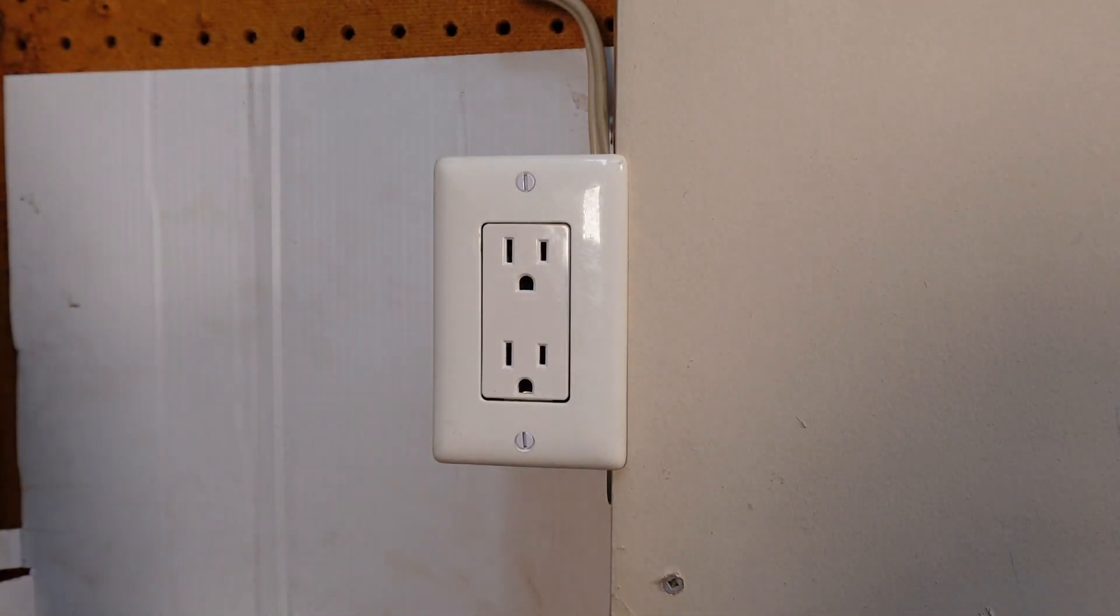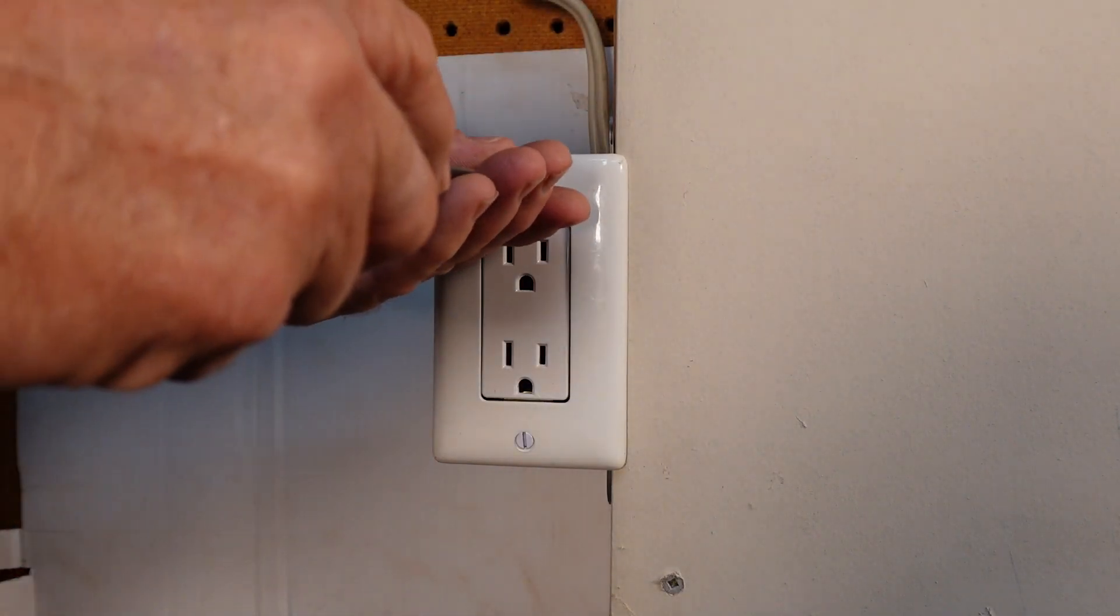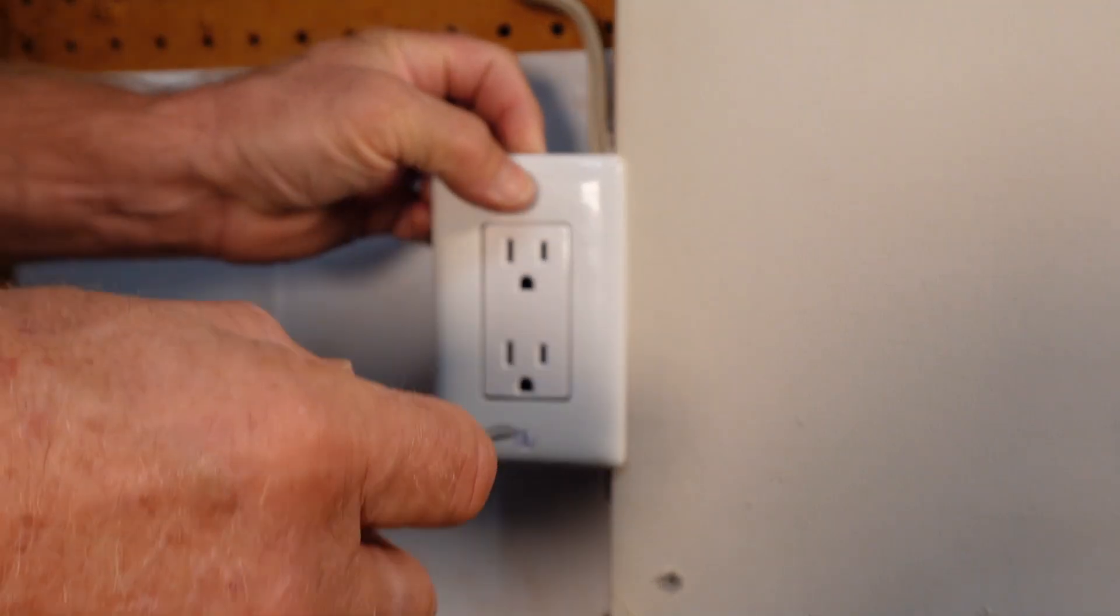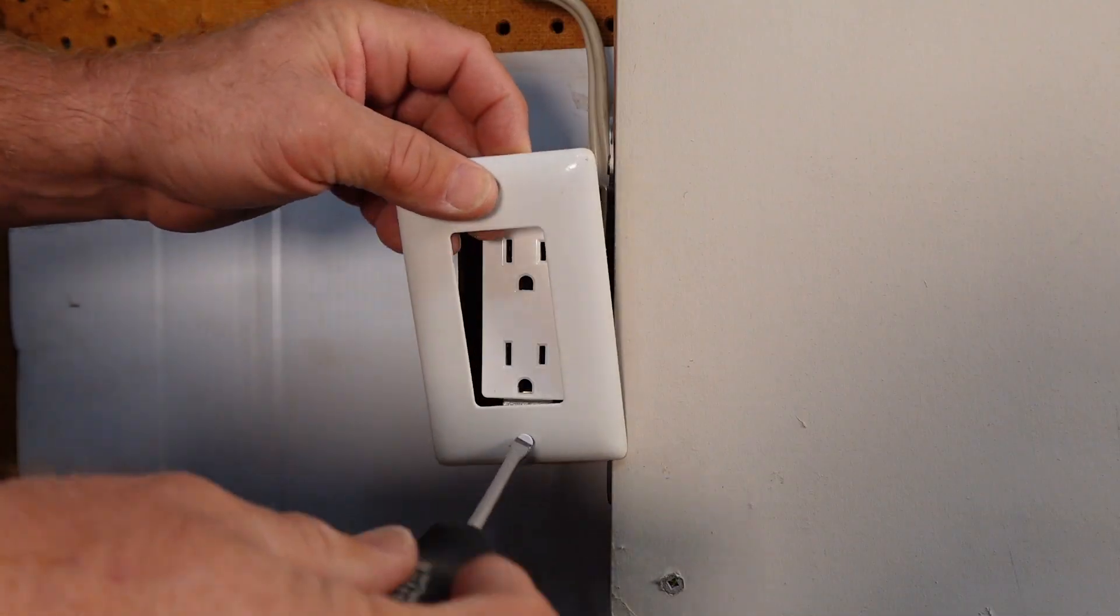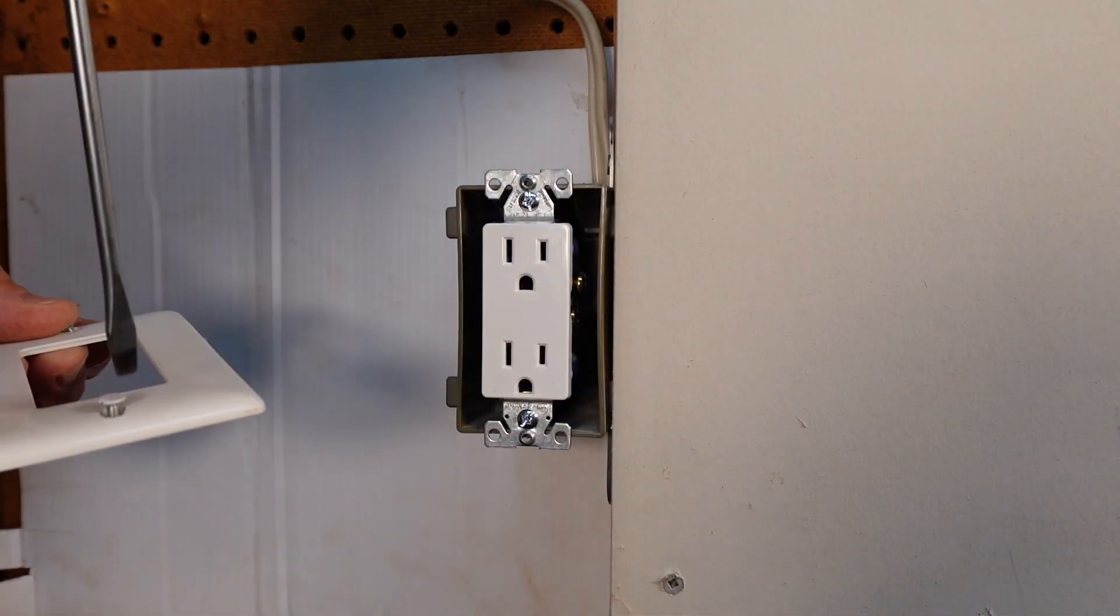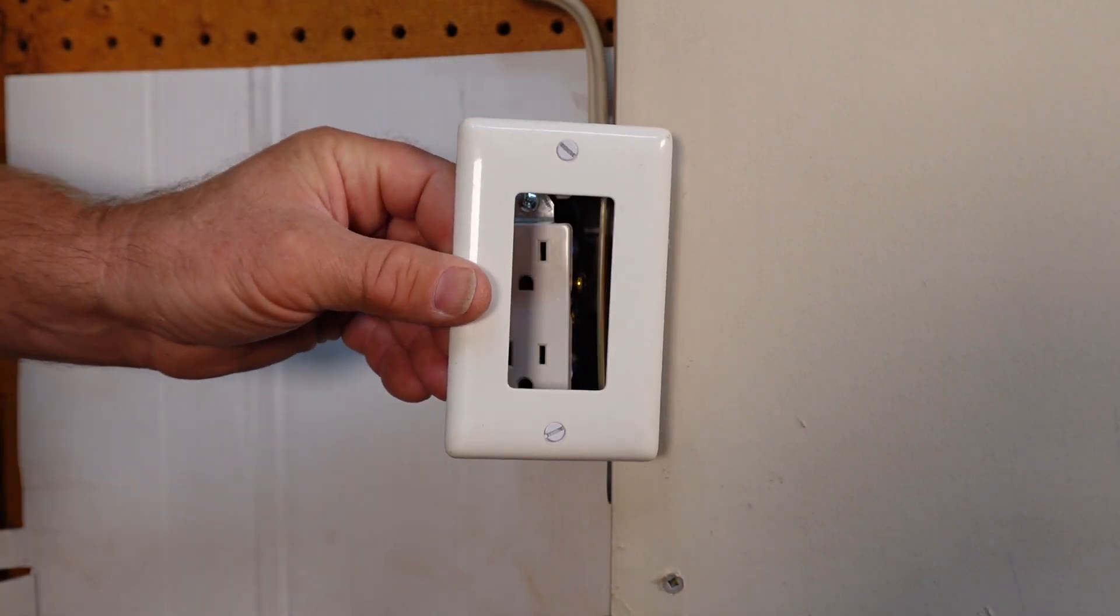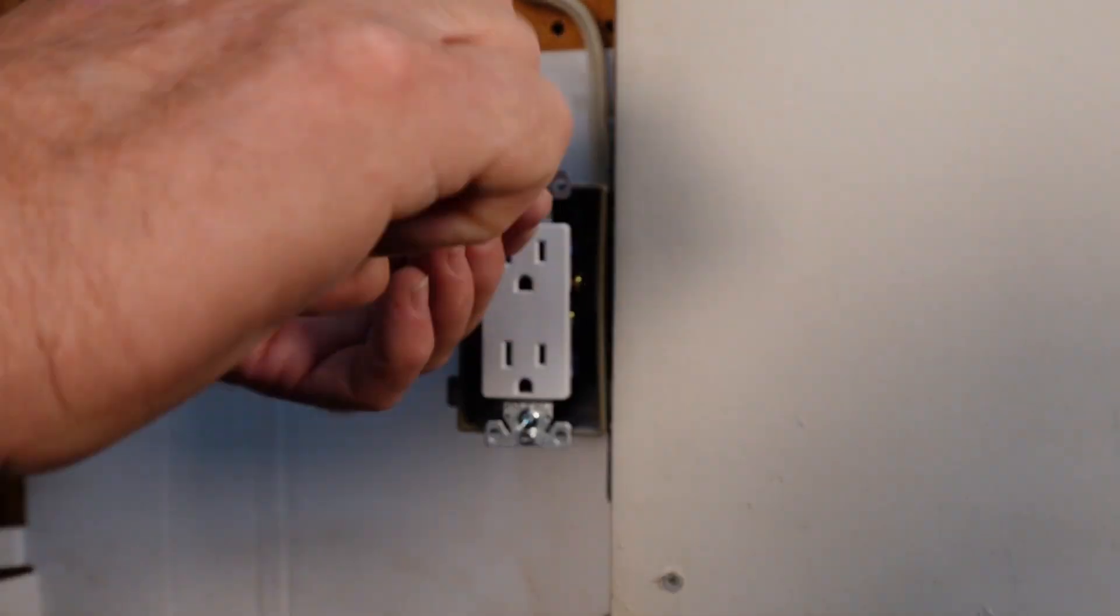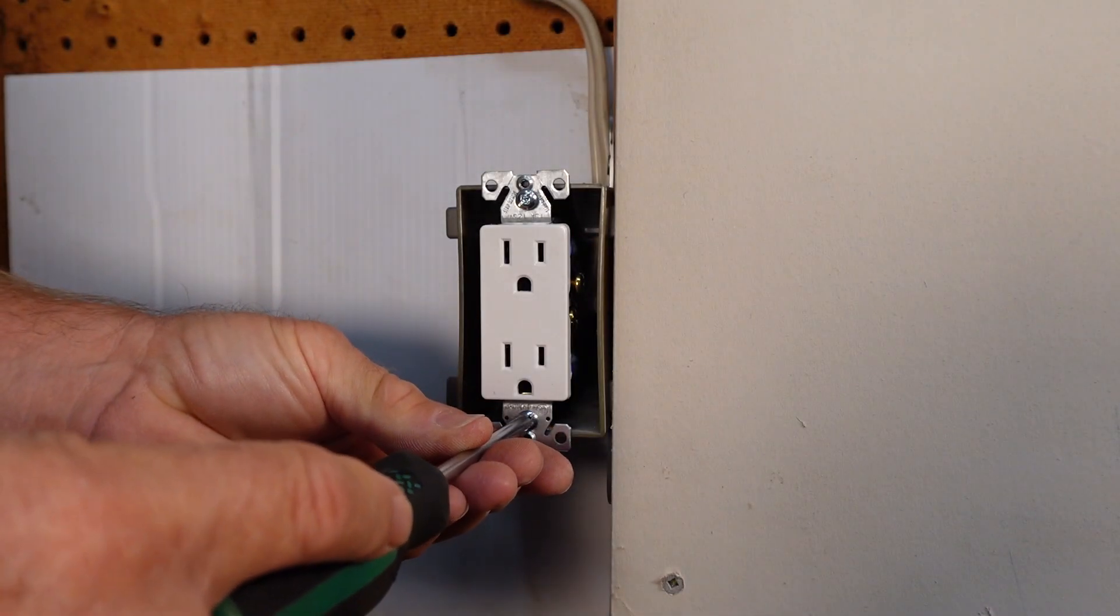So first step, take off the cover plate and these steps are standard to pretty much any outlet replacement that you're going to find throughout the house. You've got to take the cover plate off first. Try not to lose your captive screws. These little guys are hard to find if you drop them. Take your number one Robertson or a Phillips or even a standard blade. Remove your old device.